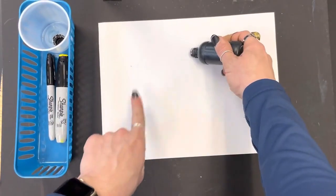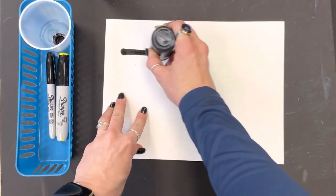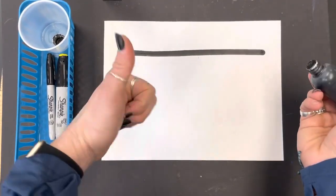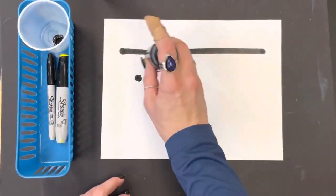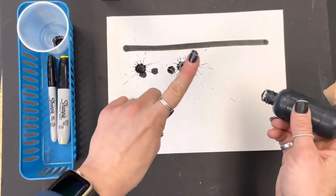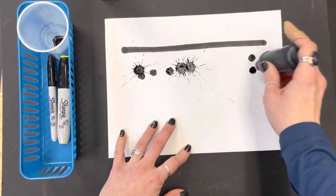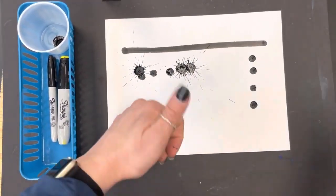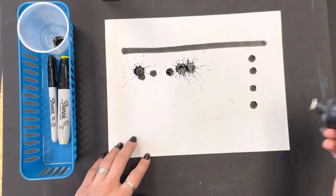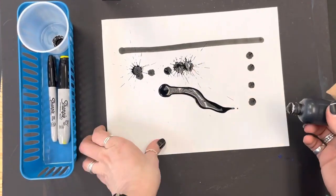You don't want to hold it at an angle because you're not going to get a line or you'll get a half of a line. You want to hold it straight up and down. This is going to give you a nice solid line. You do not want to smash it. That's going to splatter the paint and this ink does not come out. You want to gently dot your dots and do not squeeze it.